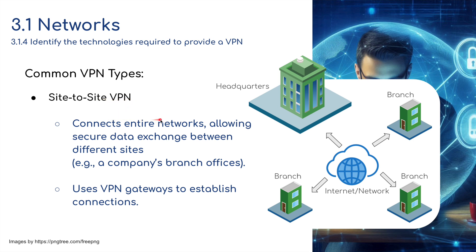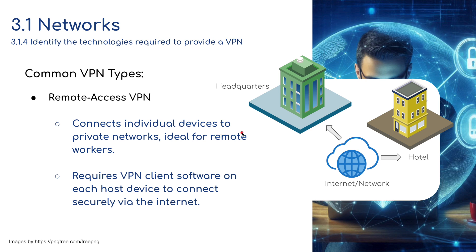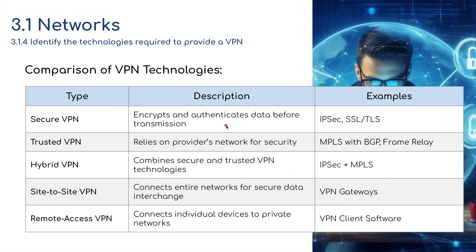Common VPN types: site-to-site VPN connects entire networks, allowing secure data exchange between different sites — such as a company's headquarters and branch subsidiaries, especially for banks. It uses VPN gateways to establish connections. Remote access VPN connects individual devices to private networks — ideal for remote workers, such as someone staying in a hotel who needs to connect back to headquarters. It requires VPN client software on each host device, such as NordVPN or TunnelBear, installed so the device can connect securely via the internet.